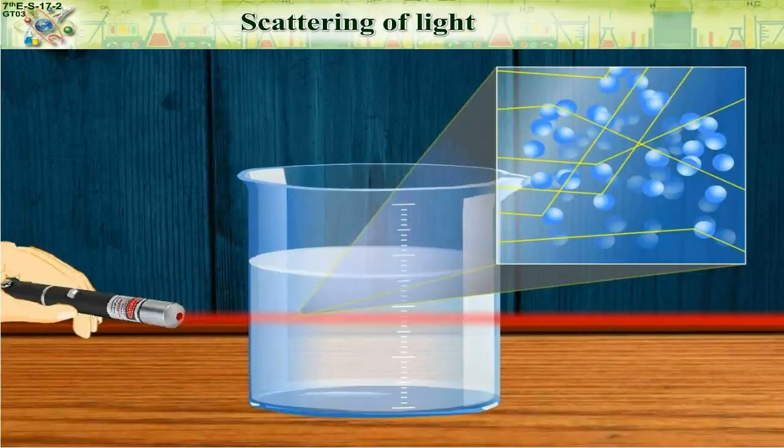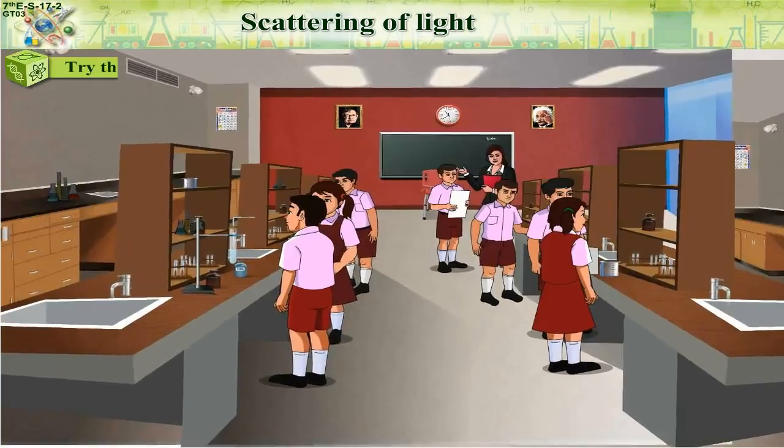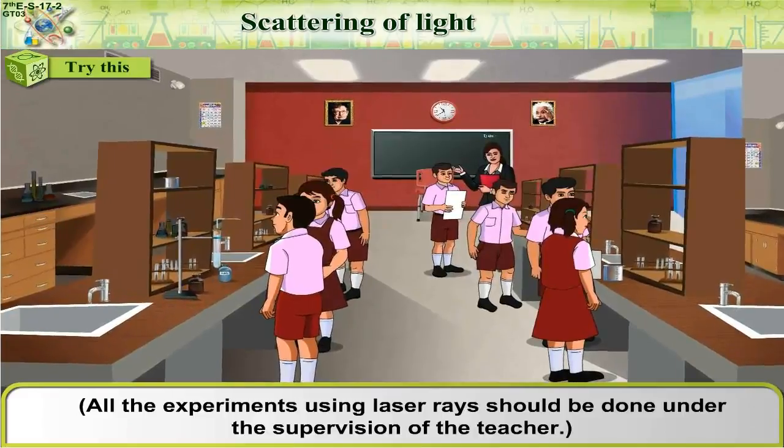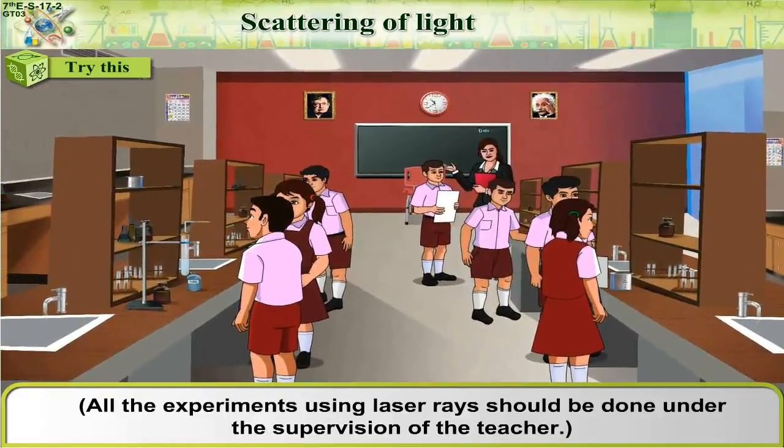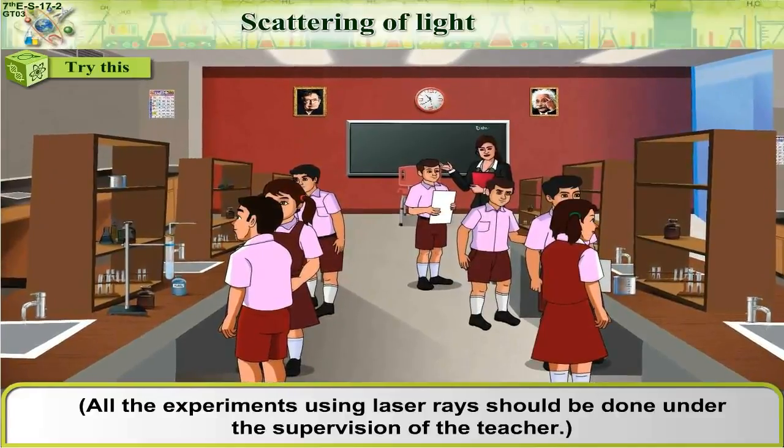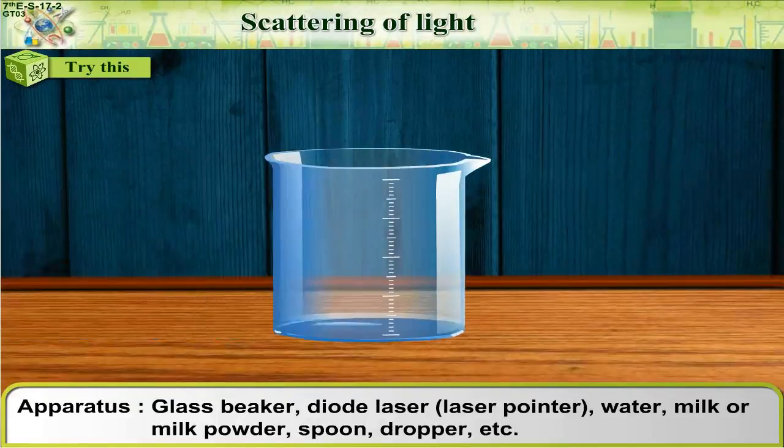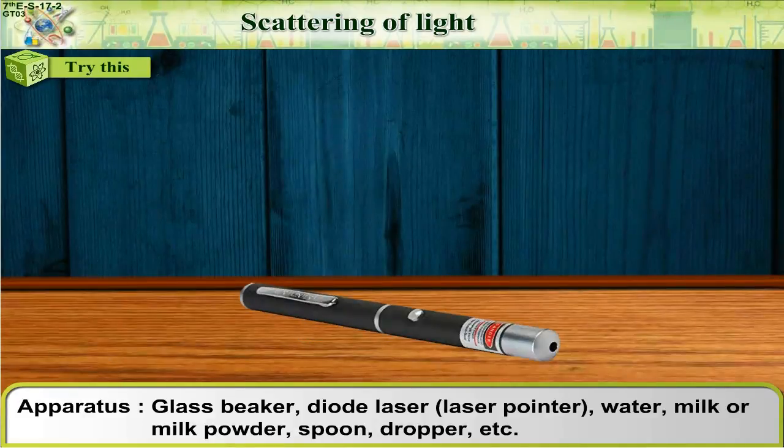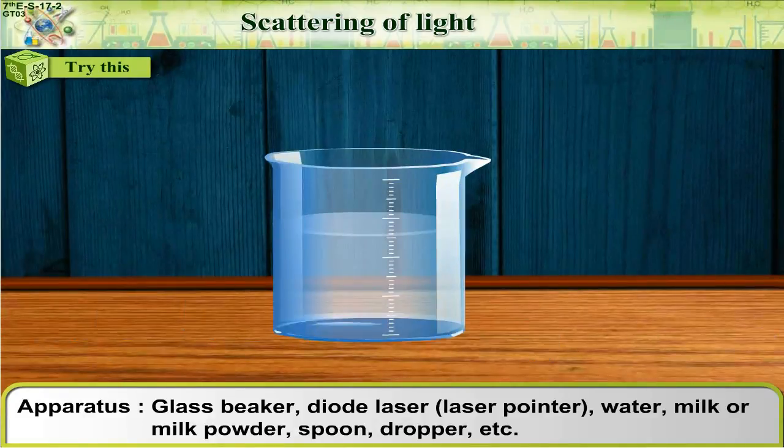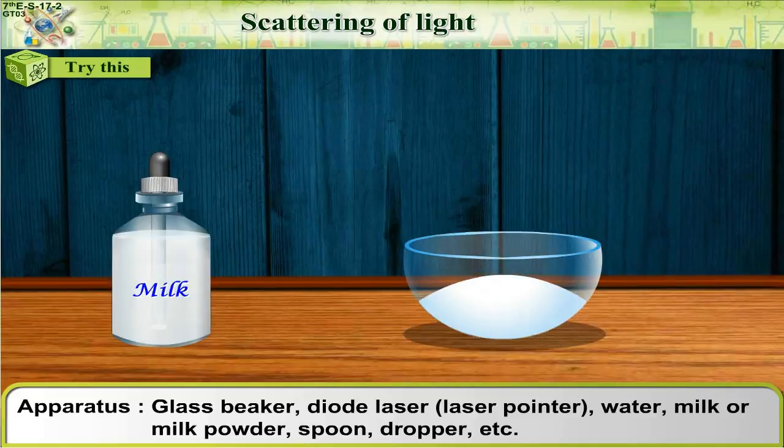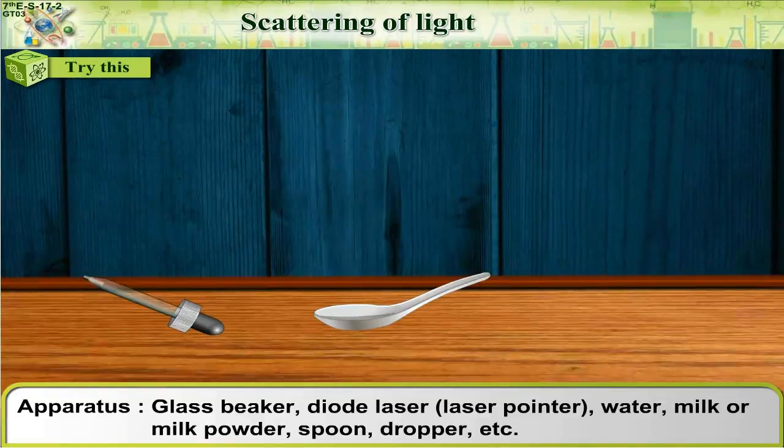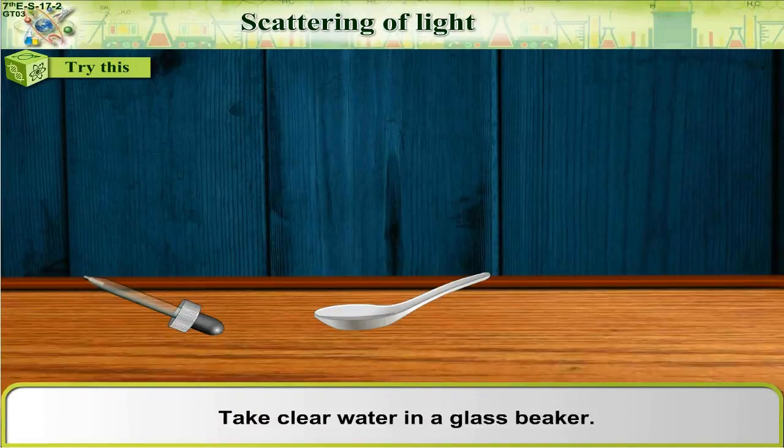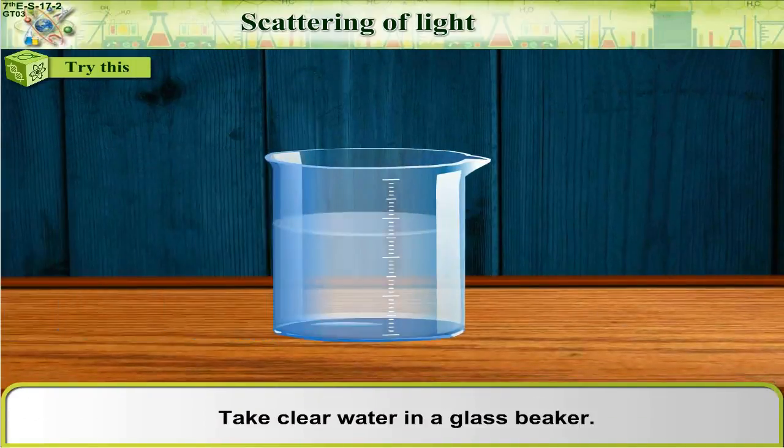Scattering of light. Try this. All experiments using laser rays should be done under the supervision of the teacher. Apparatus: glass beaker, diode laser (laser pointer), water, milk or milk powder, spoon, dropper, etc. Procedure: Take clear water in a glass beaker.